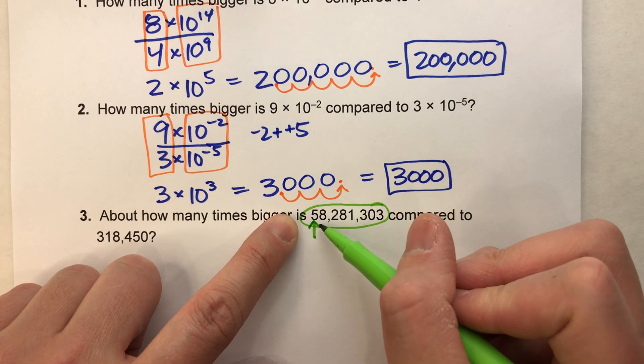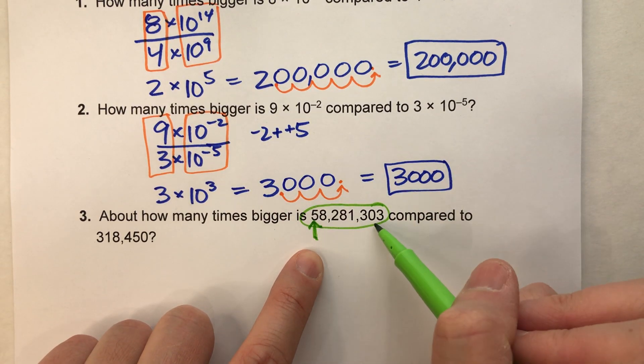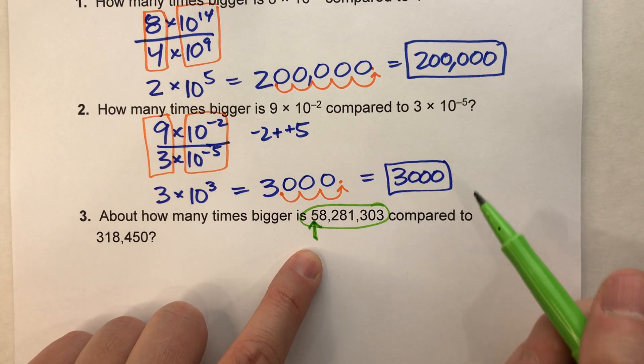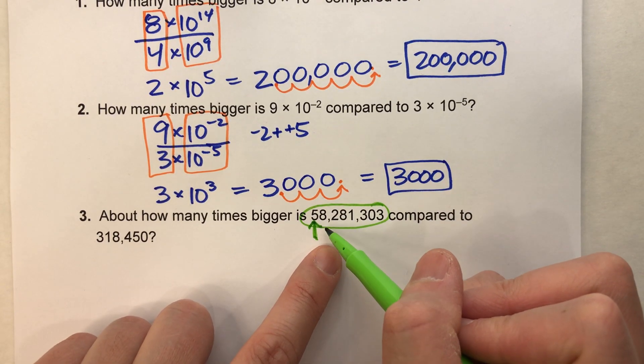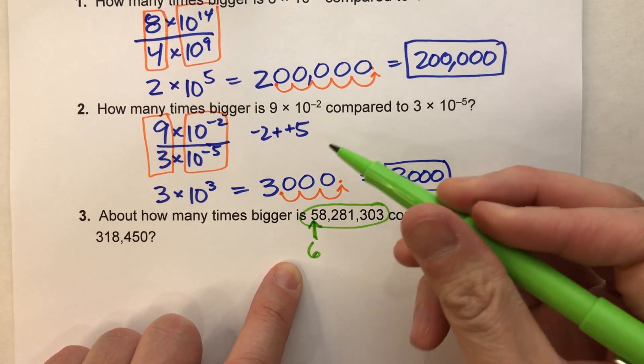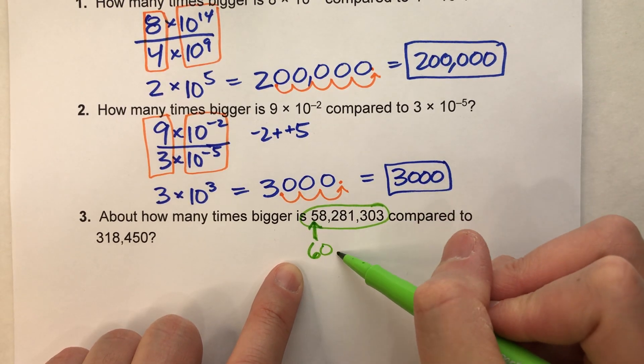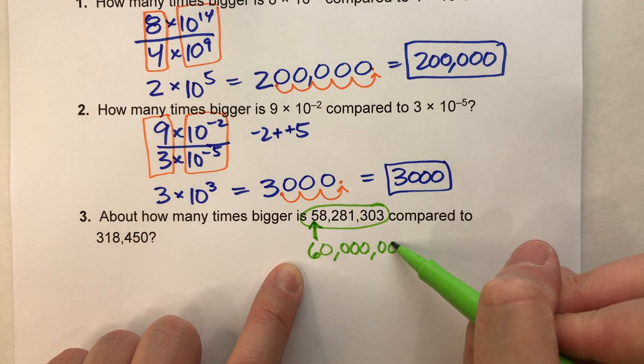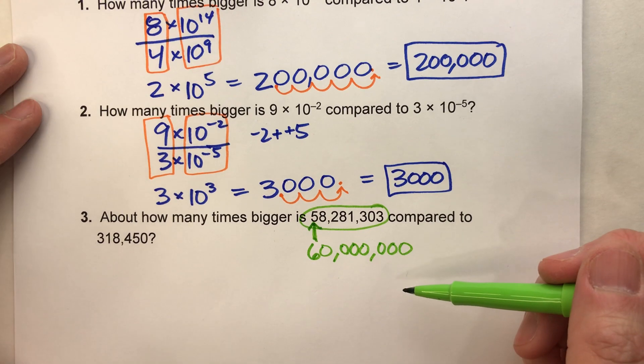But if I'm going to round this and estimate it to the greatest place value, I'm going to round that five. And because the next digit after that's a big number, I'm going to round this up to a six. So 58 million becomes 60 million, which makes sense, right?